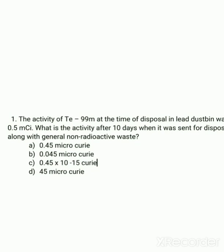The first question: the activity of Technetium-99m at the time of disposal in a lead dustbin was 0.5 mCi. What is the activity after 10 days when it was sent for disposal along with general non-radioactive waste? We will apply the equation A = A₀ × e^(−λt). We need to find the final activity A. The initial activity A₀ is 0.5 mCi, the half-life of Tc-99m is 6 hours, and the elapsed time t is 10 days.